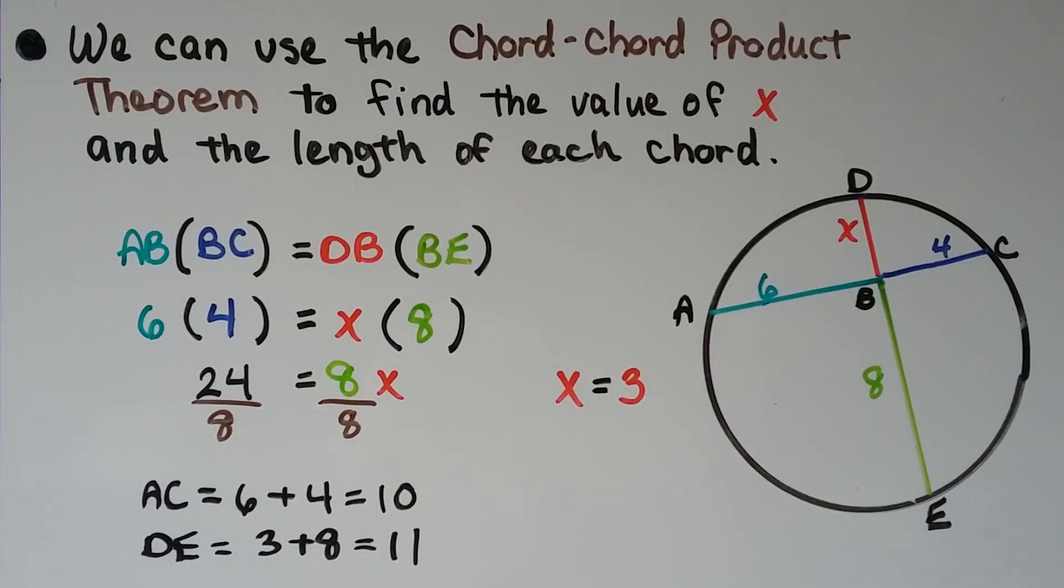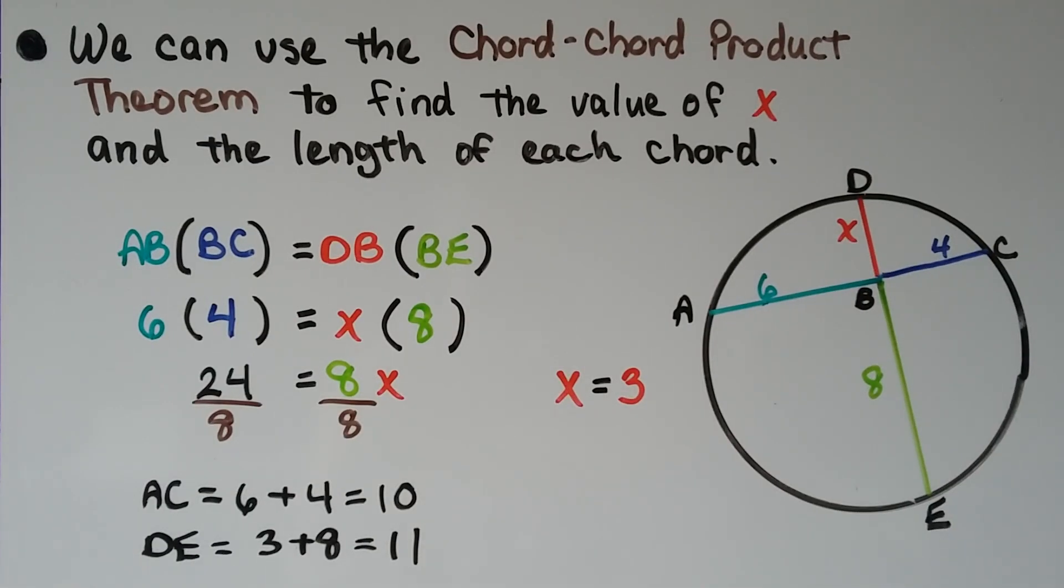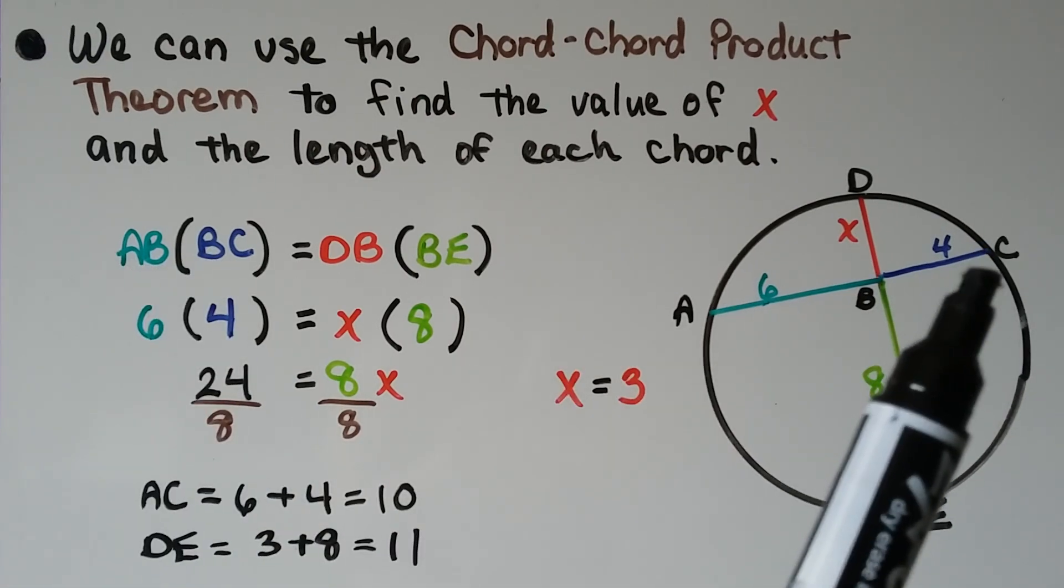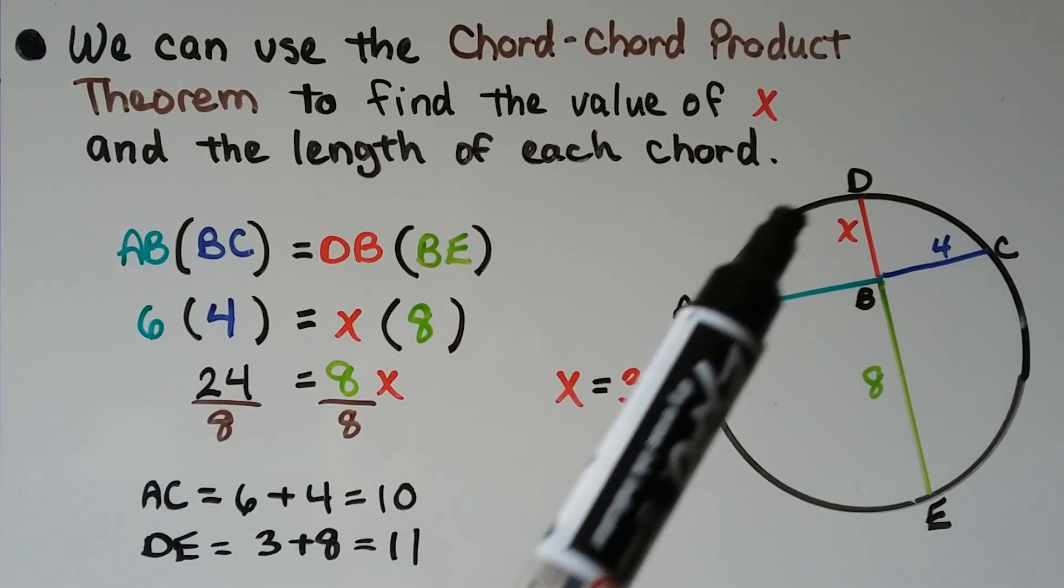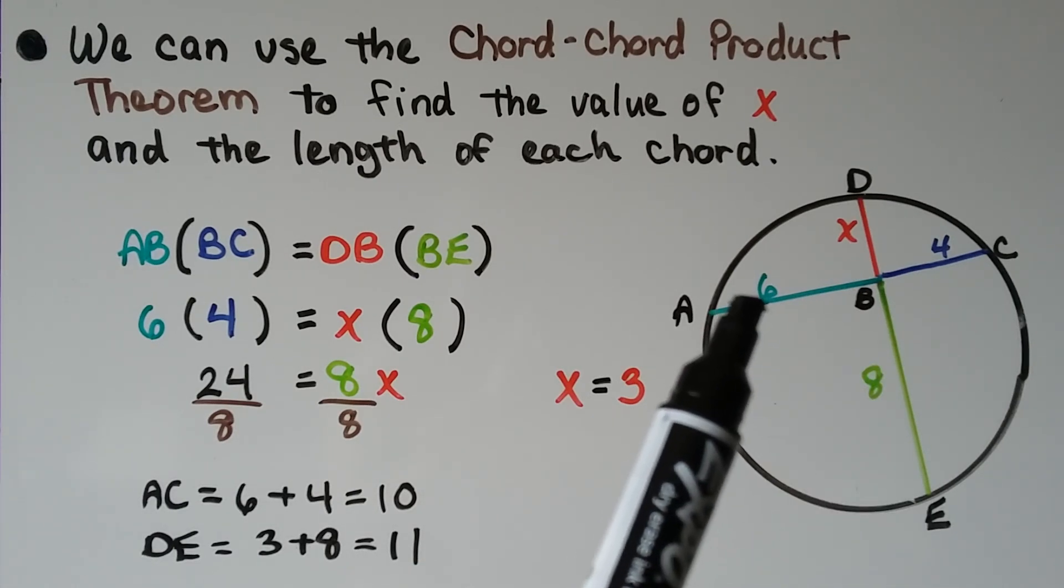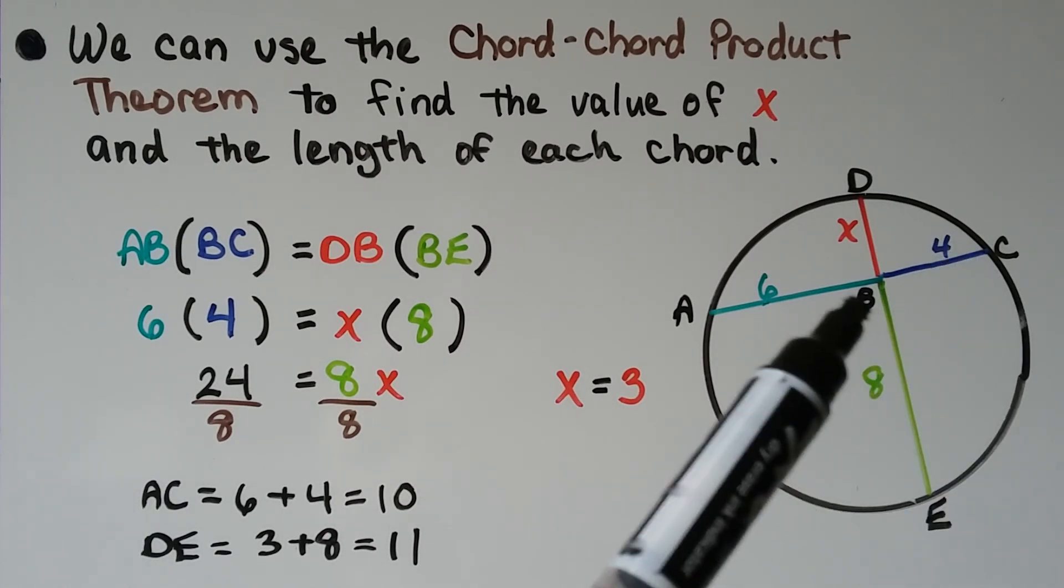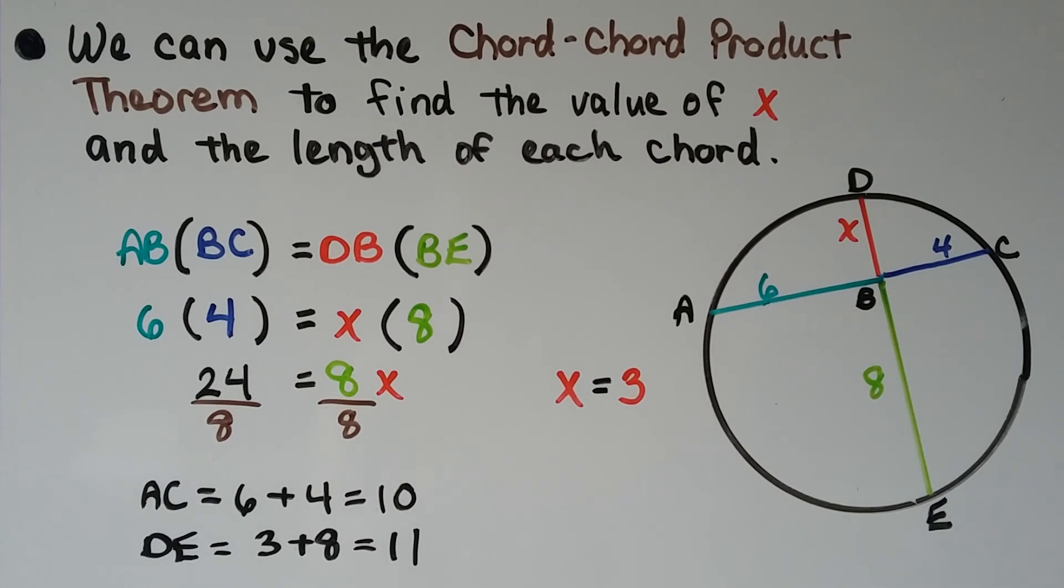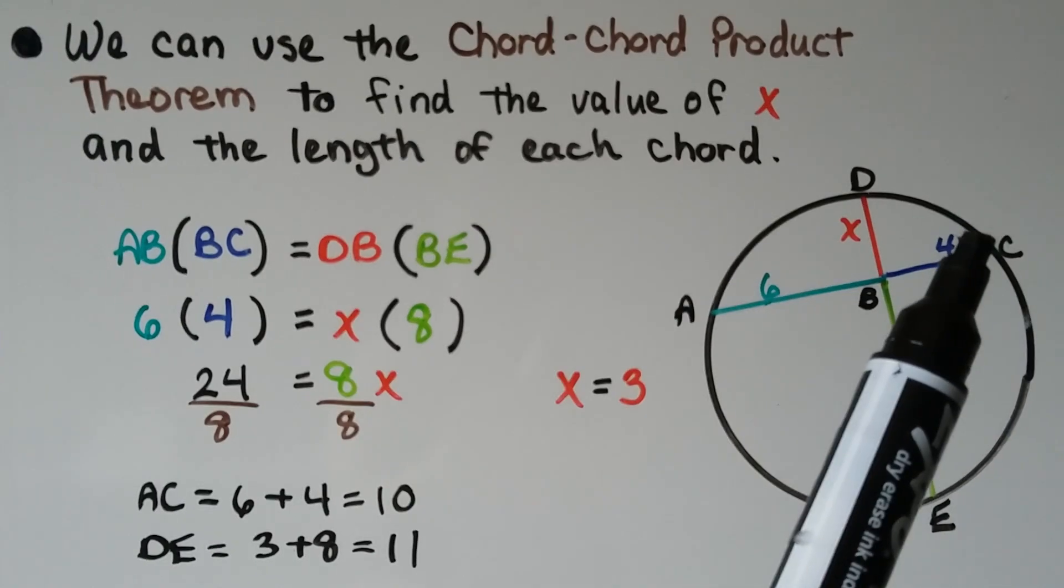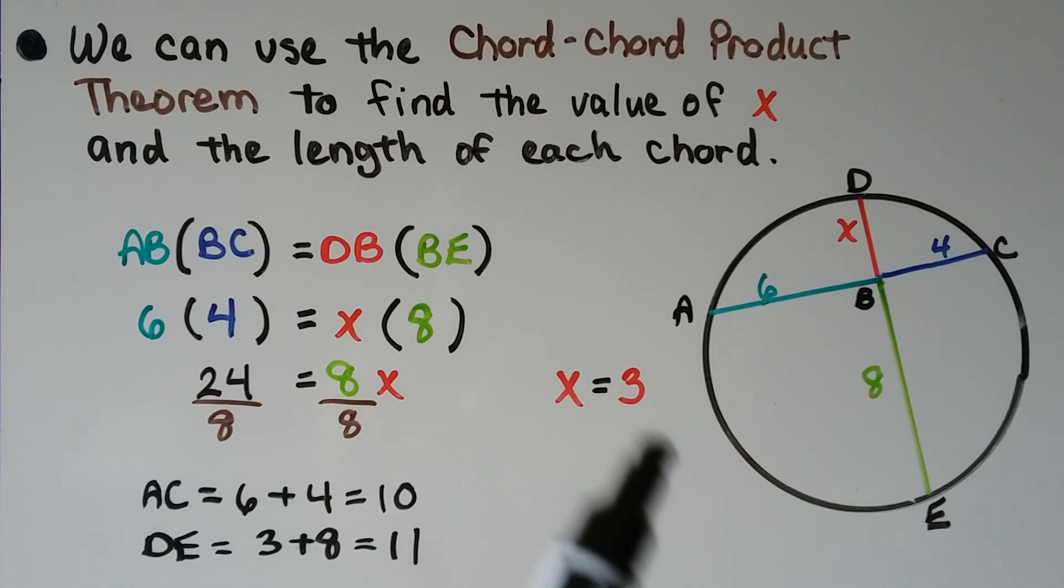We can use the Chord-Chord Product Theorem to find the value of X and the length of each chord. We have AB times BC is going to be equal to DB times BE. So this is giving us that it's a 6 here for AB and a 4 for BC, and BE is an 8. We've got 6 times 4 is equal to X times 8. A lot of you can just do this in your head. X is going to equal 3.